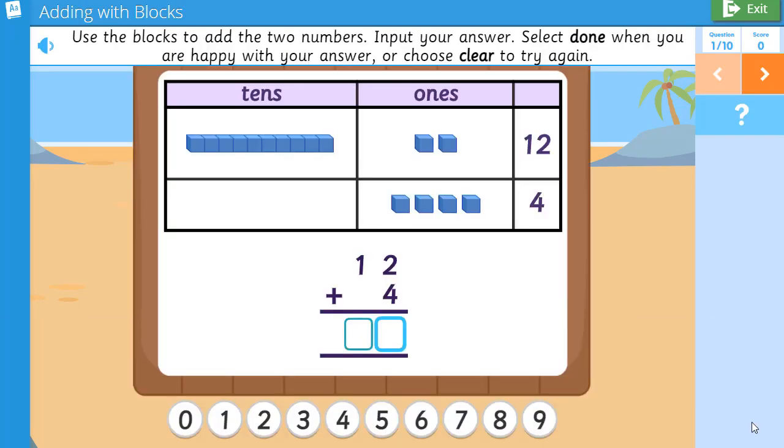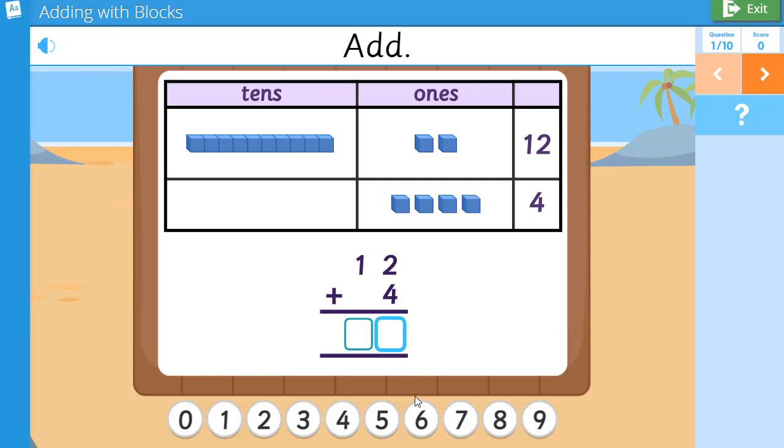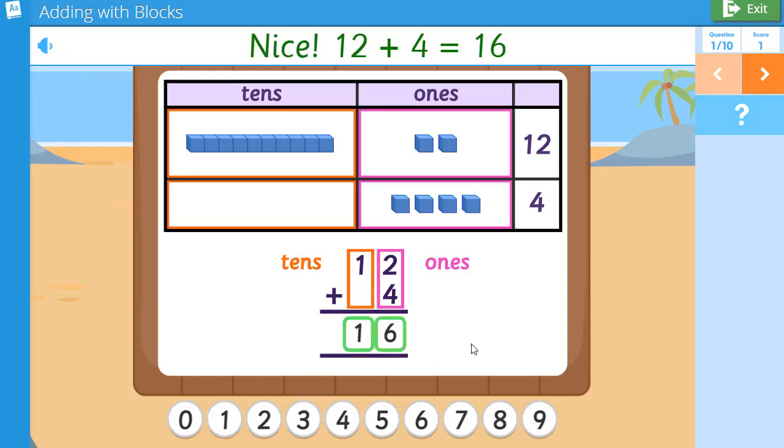Use the blocks to add the two numbers. Input your answer. Select Done when you are happy with your answer. Or choose Clear to try again. Add. 12 plus 4. Nice! 12 plus 4 equals 16.